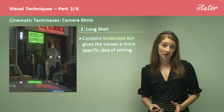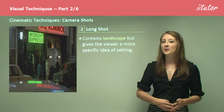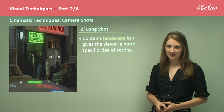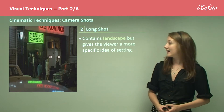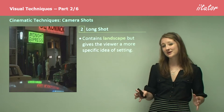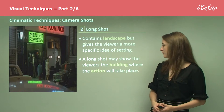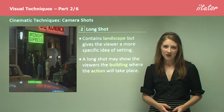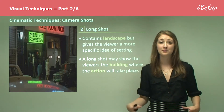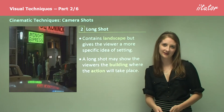Another technique is the long shot. When we look at these camera techniques, we're getting progressively smaller — going from the very wide scale down to the very detailed. The long shot contains landscape, but also gives the viewer a more specific idea of setting; you're a bit closer and not quite so far away. A long shot may show viewers the building where the action will take place — you might be seeing the sign on the building or a full shot of the building itself, but maybe not a whole lot of sky in the background, just lessening the scope a little.